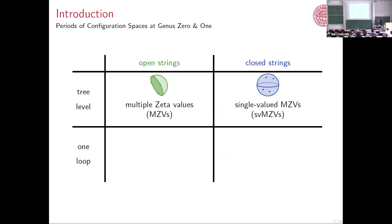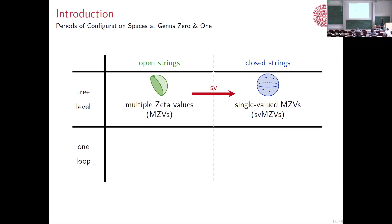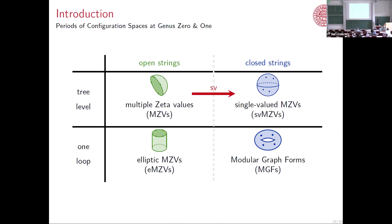Back to this table, because I'm talking about tree level but we want to go to one loop. It turns out this table with a rigid line in the middle should really be more of a membrane — there's a single-valued map that sends you from one side to the other. At one loop, for the open string we would get elliptic multiple zeta values, and for the closed string we get modular graph forms, which are non-holomorphic modular forms associated to some graph. The question arises: is there some single-valued map that also brings me from one to the other? This is more or less the topic of my talk.